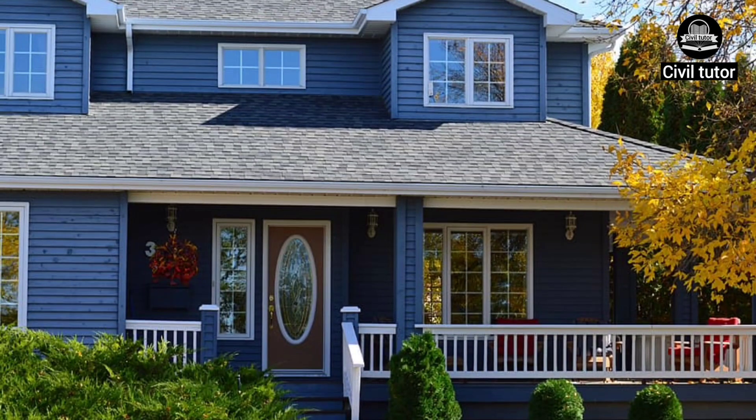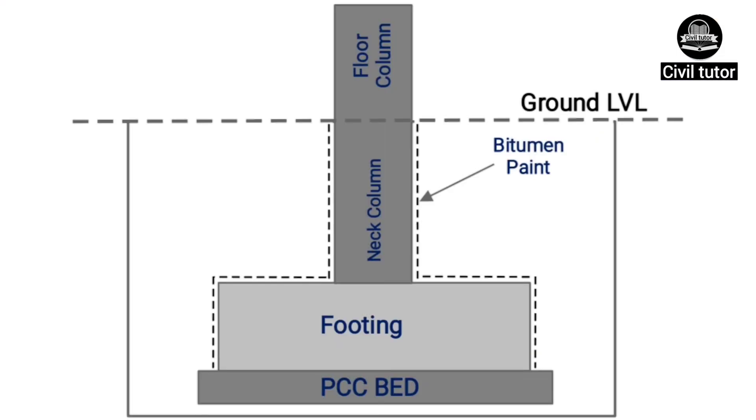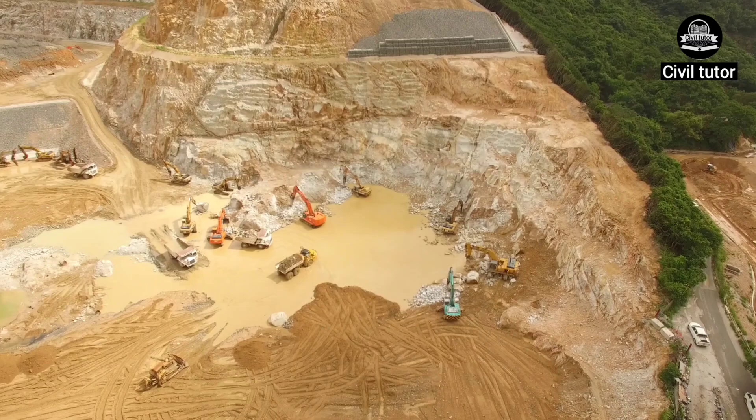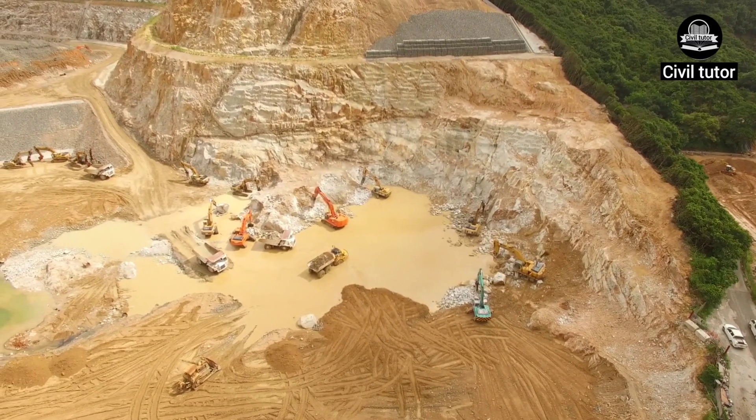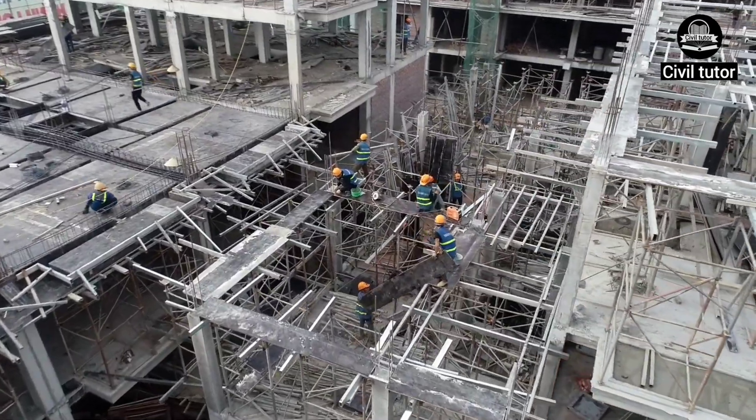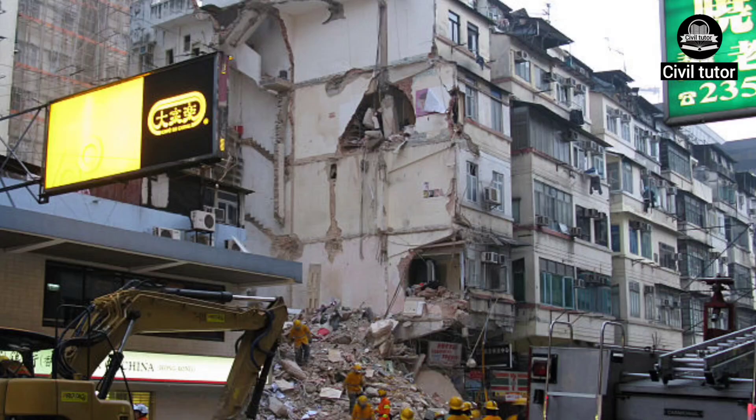Whenever we need to construct a residential structure, the main things we need to focus on are the depth of the foundation and the size of the columns. If we don't excavate the foundation to a sufficient depth, or if we don't provide the adequate size of the columns required for a particular number of storeys, the structure would be prone to failure.